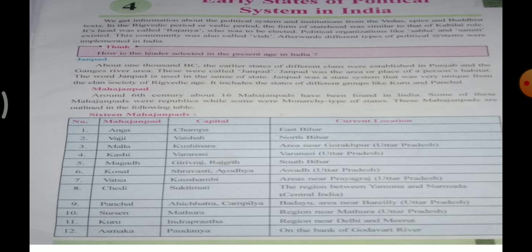Rig Vedic age mein Janapada ko Kuru aur Panchala mein divide kiya tha. Mahajanapada — around the 6th century, about 16 Mahajanapadas have been found in India, Bharat varsh mein. Some of these Mahajanapadas were republics while some were monarchy-type states. These Mahajanapadas are outlined in the following table.